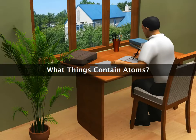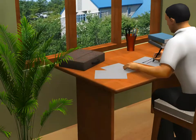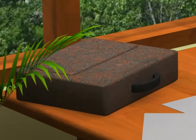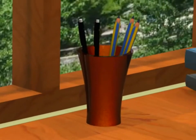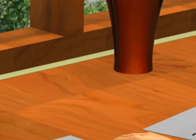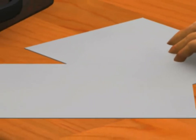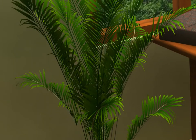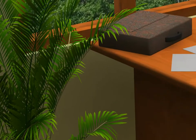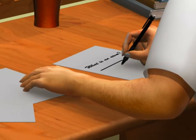What things contain atoms? Everything — like this bag, pencils. Everything that is naturally found in our environment is made up of atoms. Even we humans are made up of atoms.